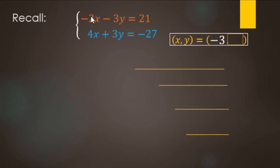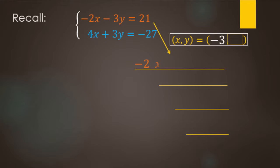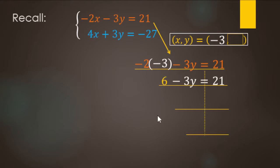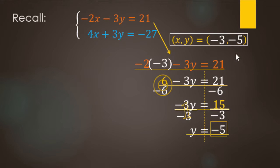Next, find the y value. Choose whichever equation looks easiest — let's use the top one. Replace x with negative 3: negative 2 times negative 3 gives us a two-step equation. Subtract 6 from both sides, leaving negative 3y equals 15. Divide by negative 3 and you get y equals negative 5. So the ordered pair that makes both equations true — the solution — is (negative 3, negative 5).